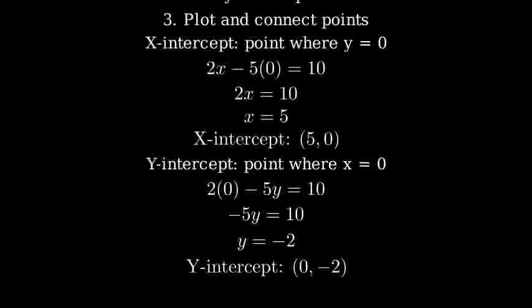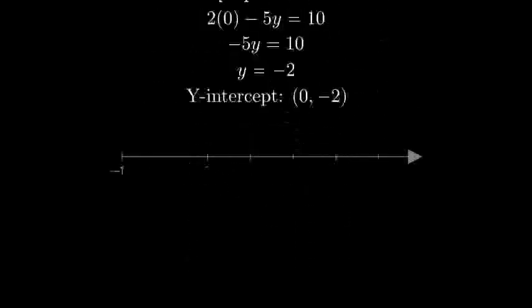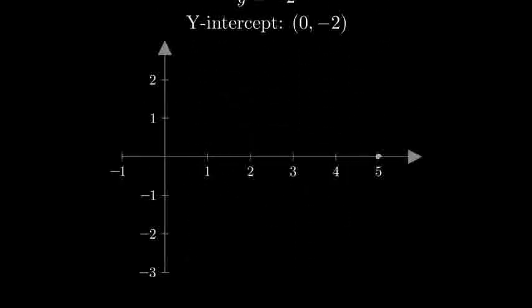Now, let's plot these points and draw our line. Here's our coordinate system. First, let's plot the x-intercept at (5, 0). Next, we'll plot the y-intercept at (0, -2). Finally, we'll connect these points to create our line.